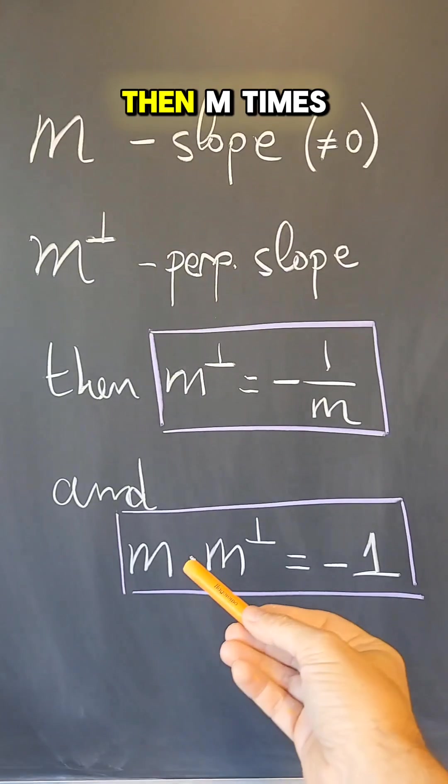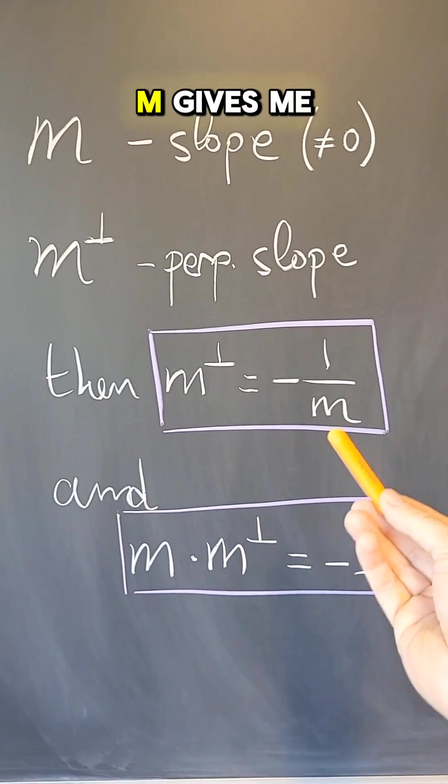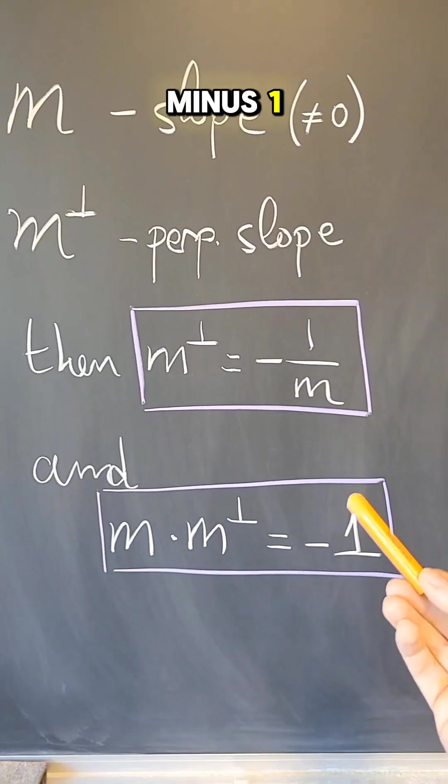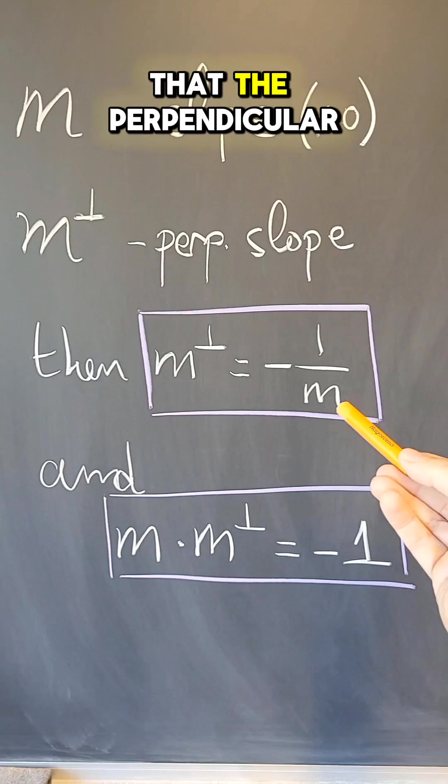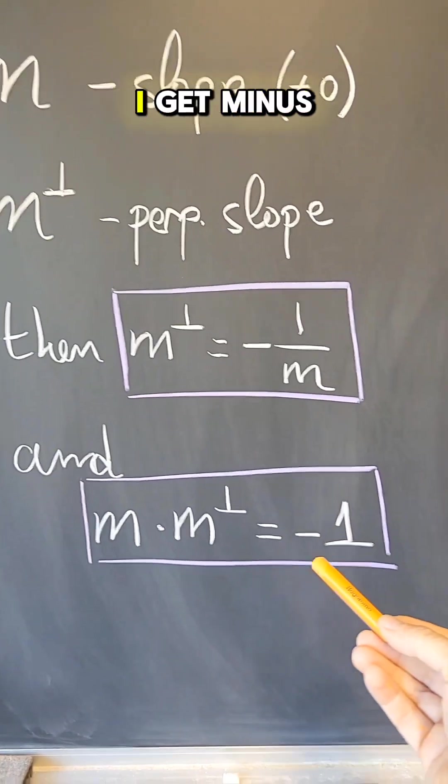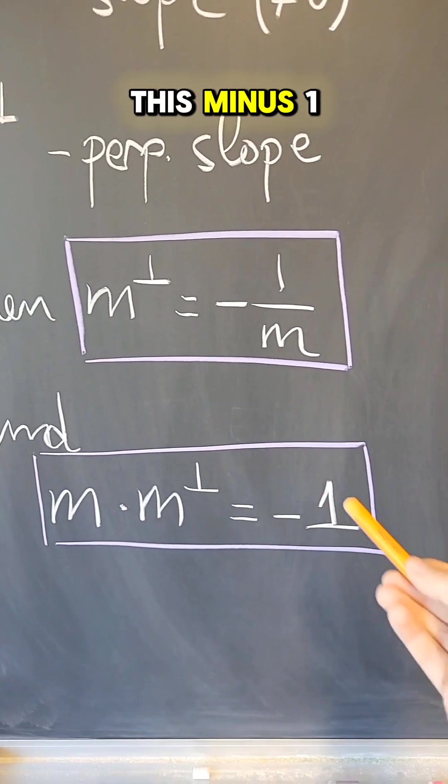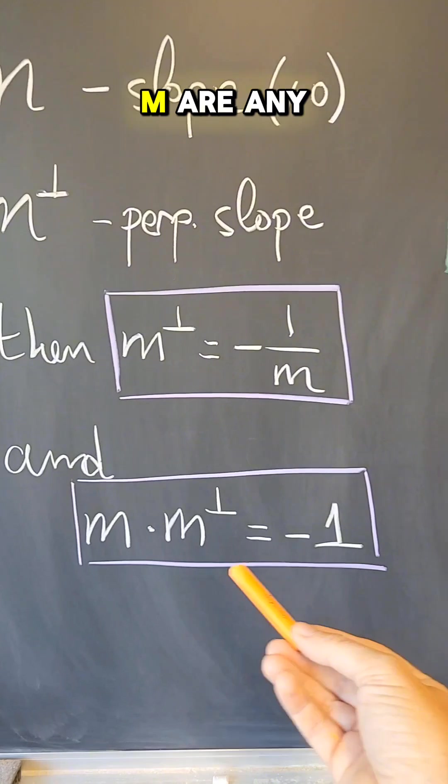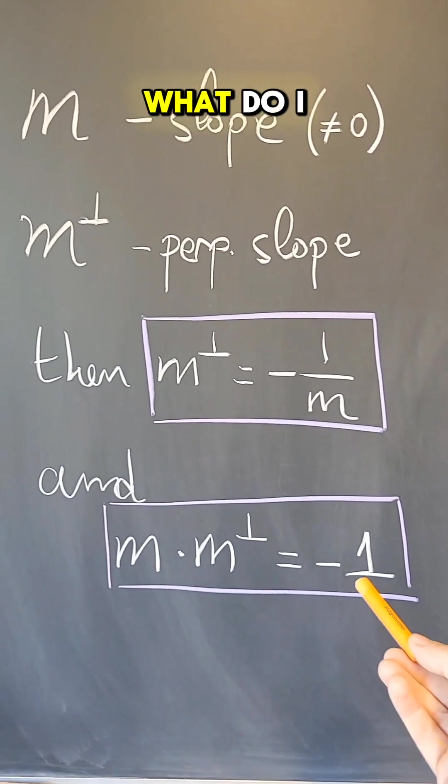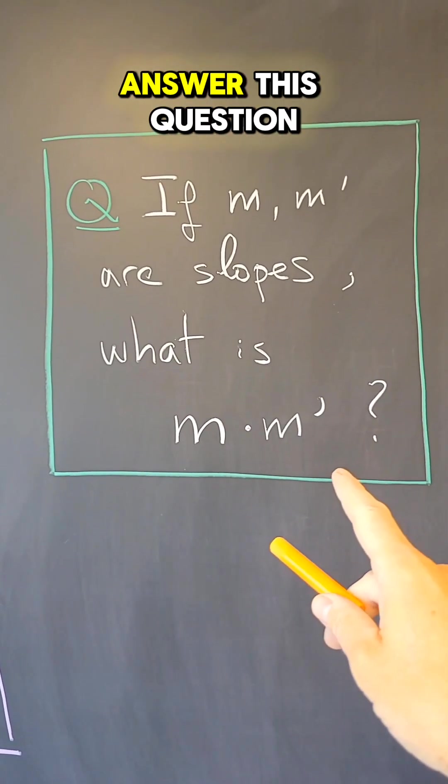If so, then m times minus one over m gives me minus one. So why is that the perpendicular slope? And why do I get minus one? What is this minus one? What happens if m are any two slopes? What do I get? By the end of this video, I will answer this question.